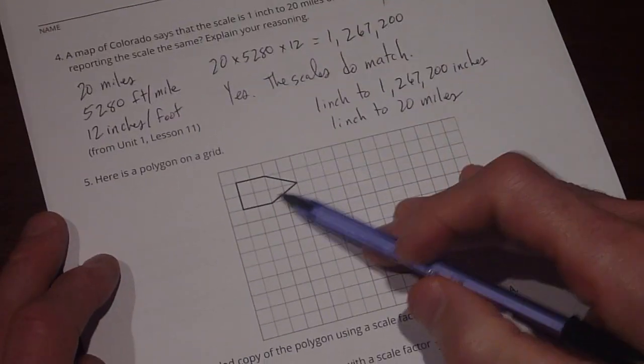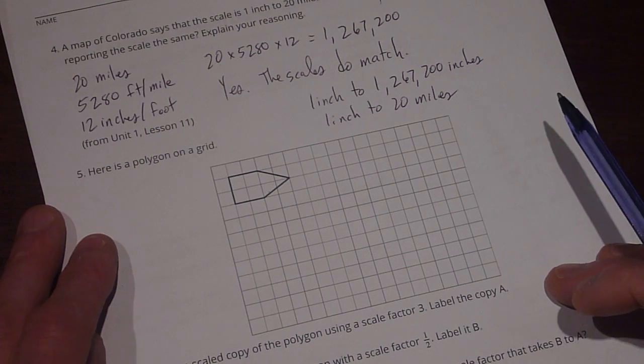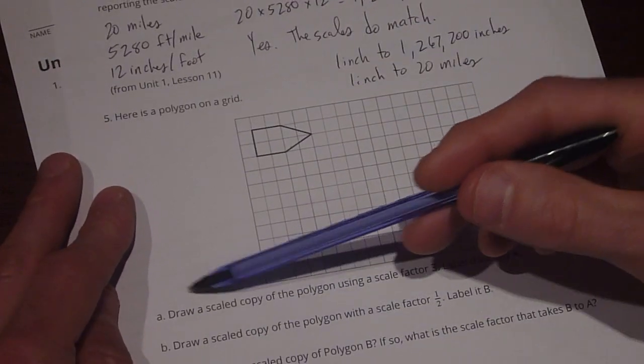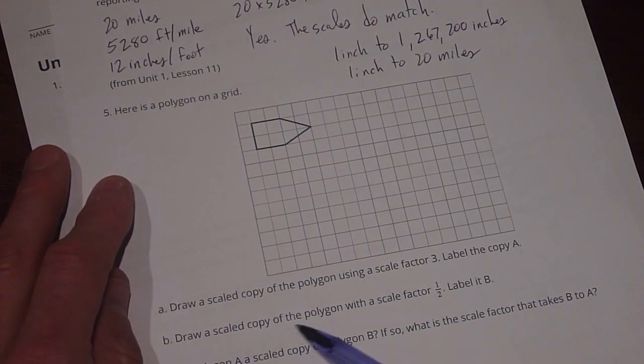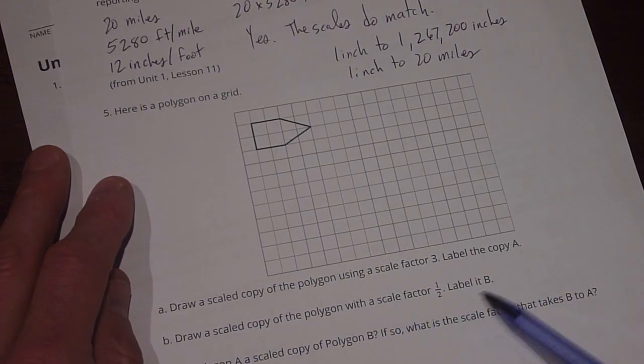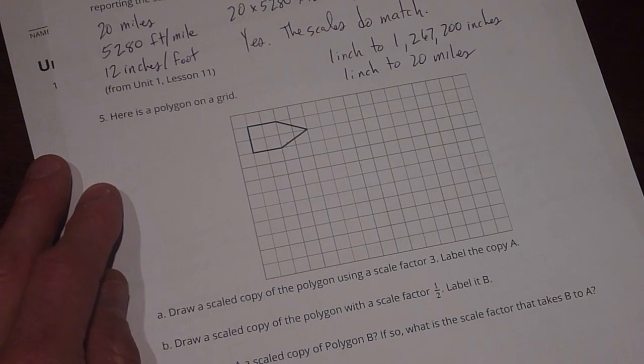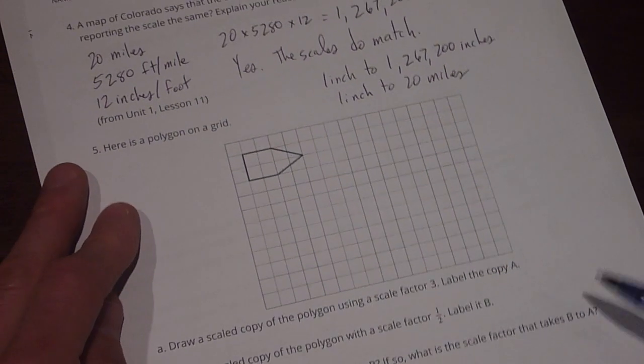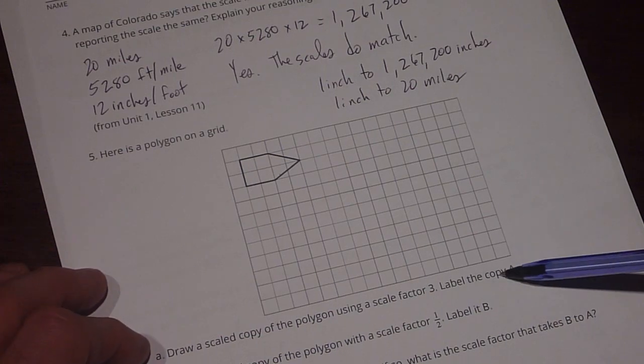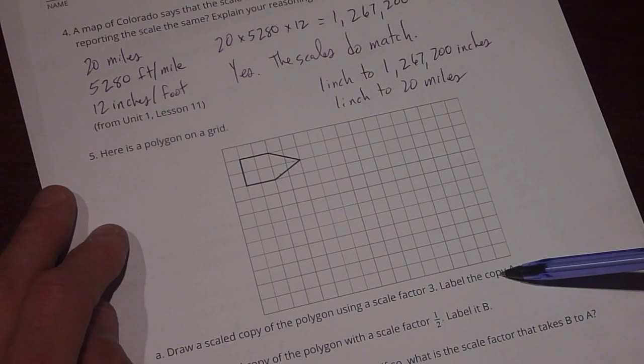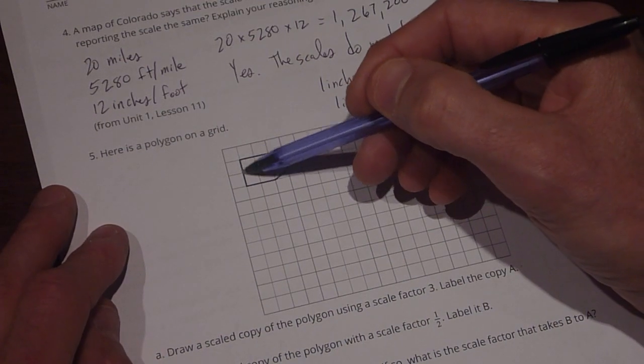Number 5. Here's a polygon on a grid. A says draw a scaled copy of the polygon using a scale factor of 3 and label the copy A. B says draw a scaled copy of the polygon with a scale factor 1 half and label it B. C says is polygon A a scaled copy of polygon B? If so, what is the scale factor that takes B to A? So first, let's start with A. And we know that we're trying to use a scale factor of 3. So everything has to be increased by a size of 3.